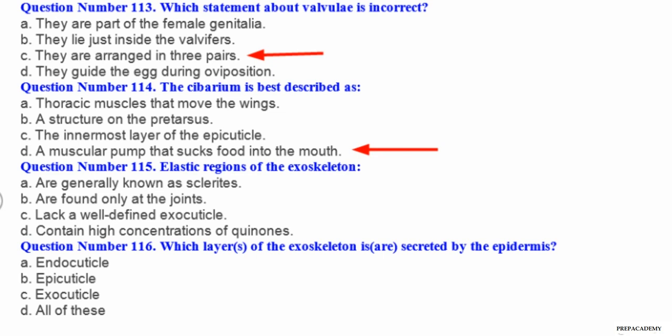Question number 115. Elastic regions of the exoskeleton: A are generally known as sclerites, B are found only at the joints, C lack a well-defined exocuticle, D contain high concentrations of quinones. Question number 116. Which layers of the exoskeleton are secreted by the epidermis? A endocuticle, B epicuticle, C exocuticle, D all of these.